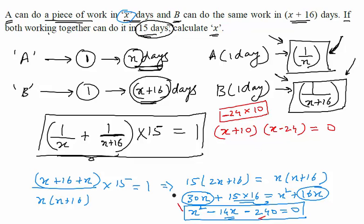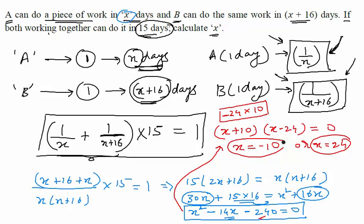This equation gives x = −10 or x = 24. These are the two possible values of x. But x is the number of days taken by A to complete one piece of work, so we cannot get a negative value. We will have to neglect −10 as our answer. So the only answer we have is x = 24.